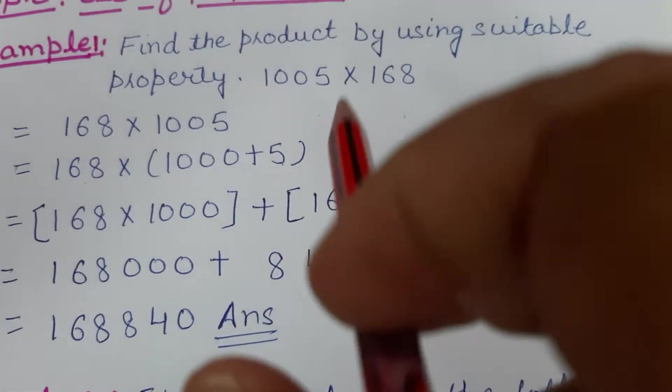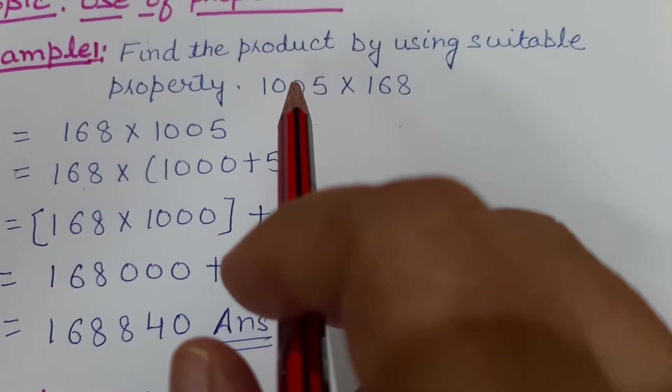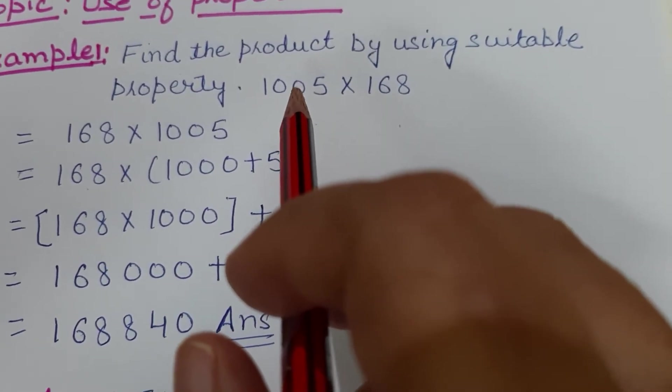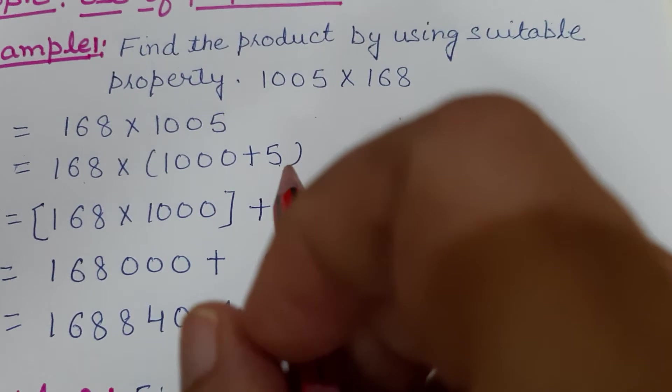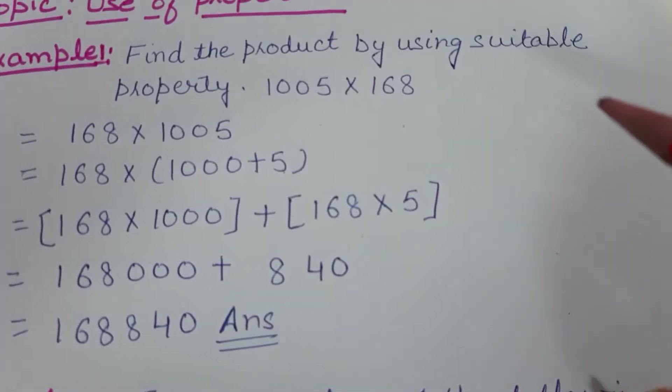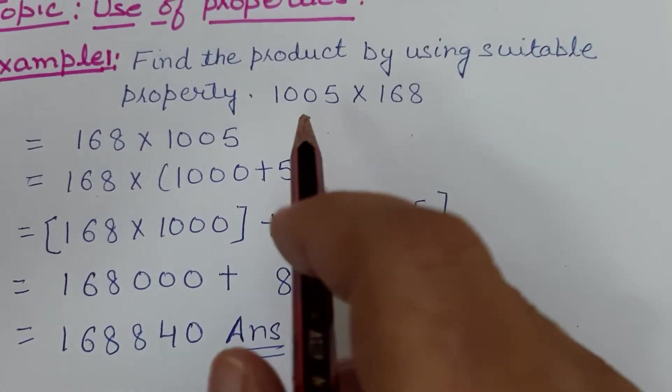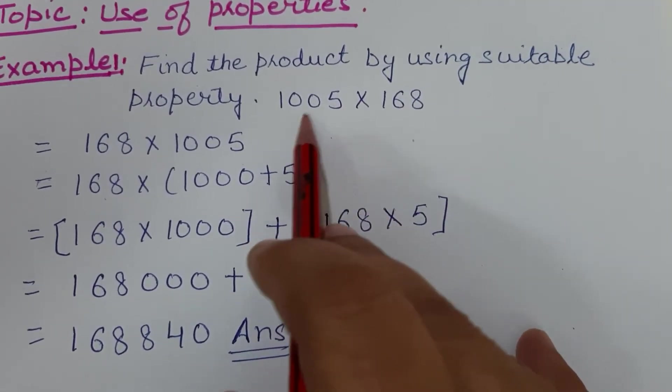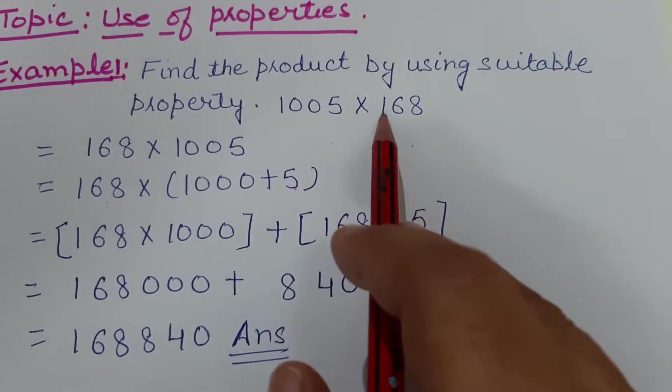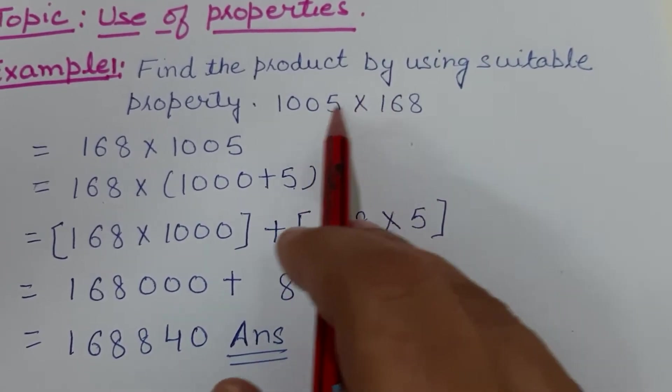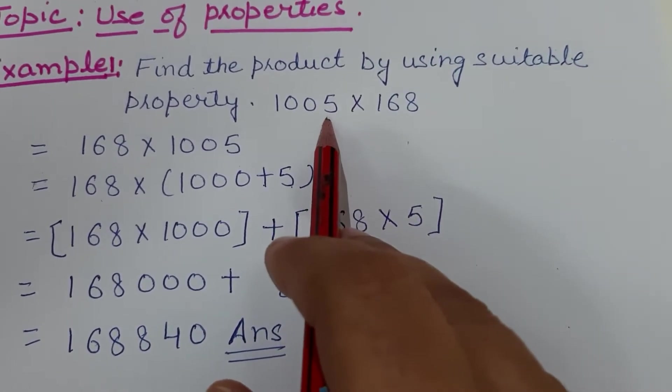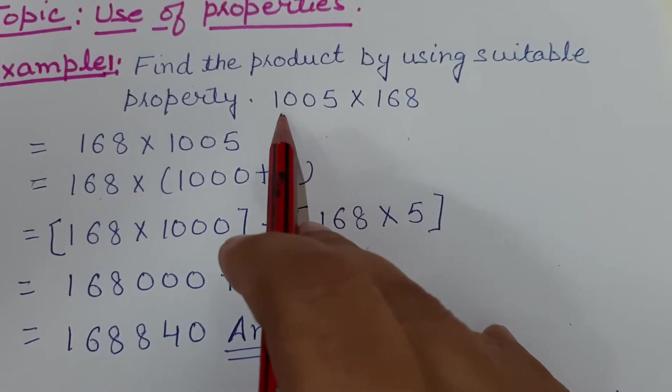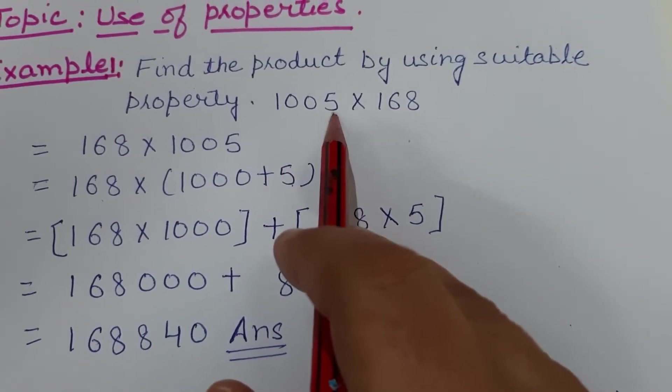Let's start. First, you will focus on the number which is nearest to tens, hundreds, thousands, or ten thousands. If you see, out of these two numbers, 1005 is nearest to thousand, not nearest to hundred. It means we will break this number.